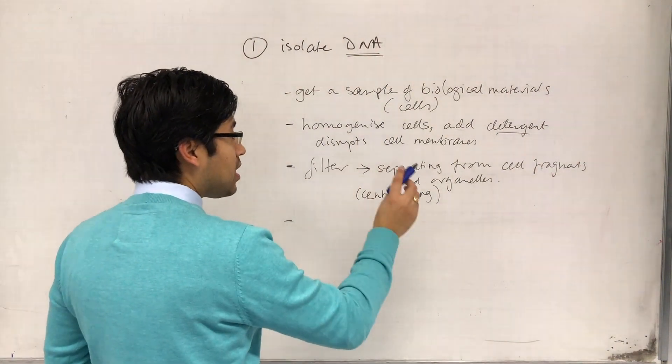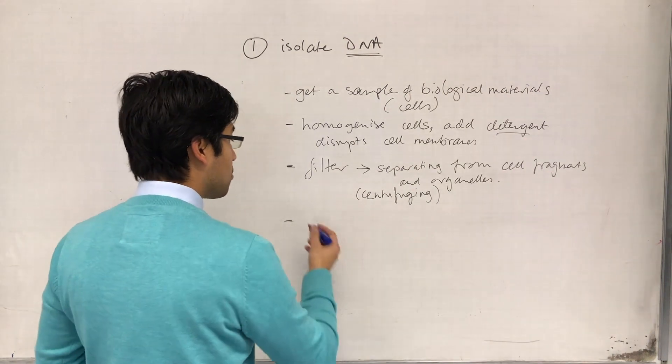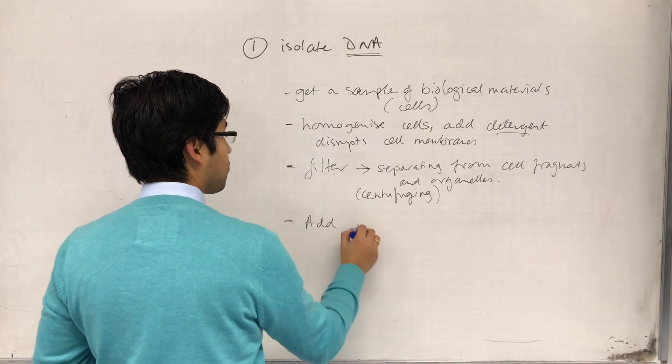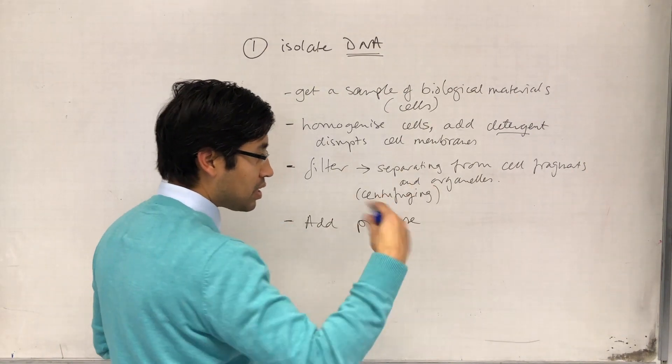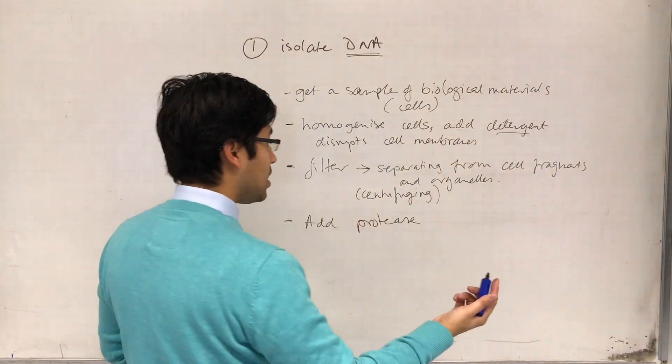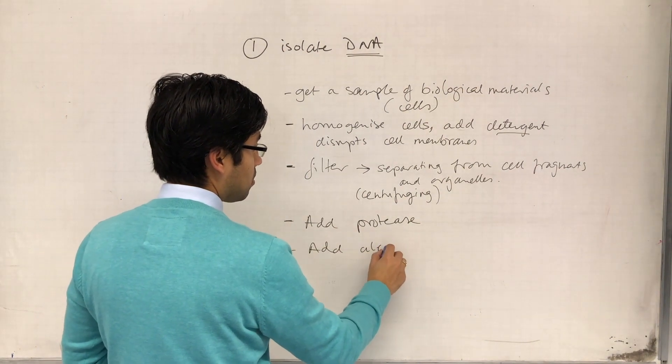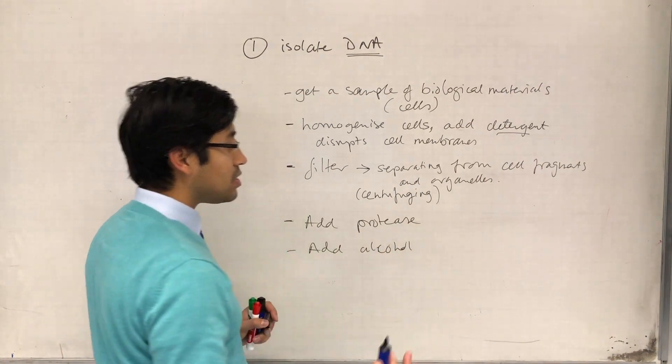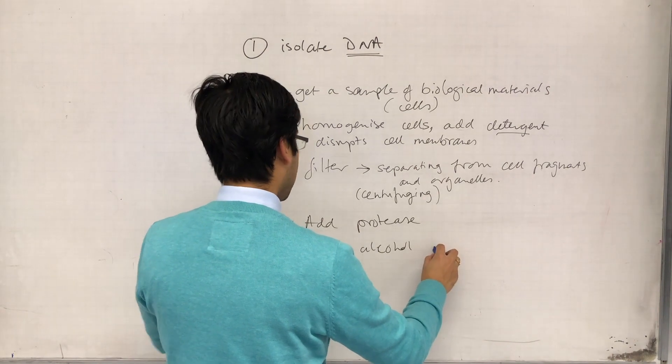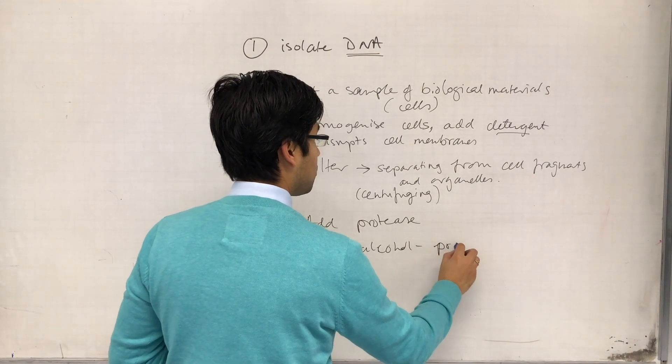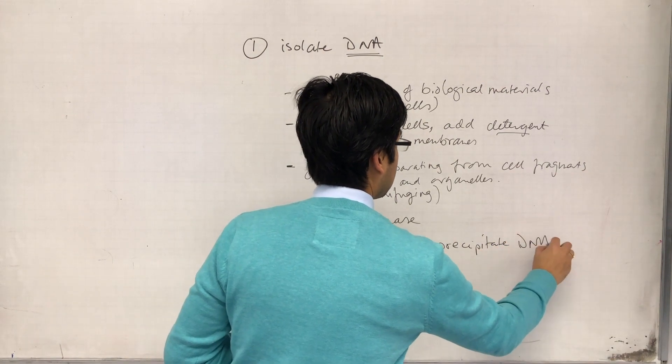All right, so DNA then is in solution, but the DNA is bound to proteins, and so we must add protease enzymes to break down the proteins that the DNA is associated with, and then we add alcohol to precipitate the DNA, and at that point, it's purified.